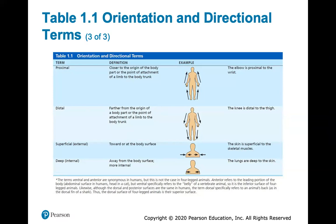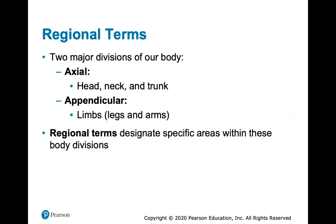Superficial and deep are also very important terms we'll use to describe structures. Superficial is toward or at the body surface — the skin is superficial to the skeletal muscles. Deep is away from the body surface, more internal — the lungs are deep to the skin. That's a good review of those directional terms.